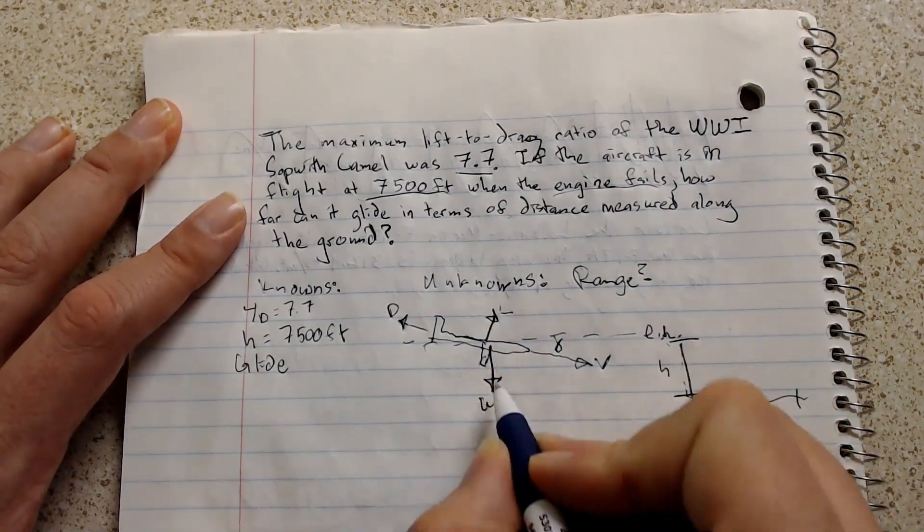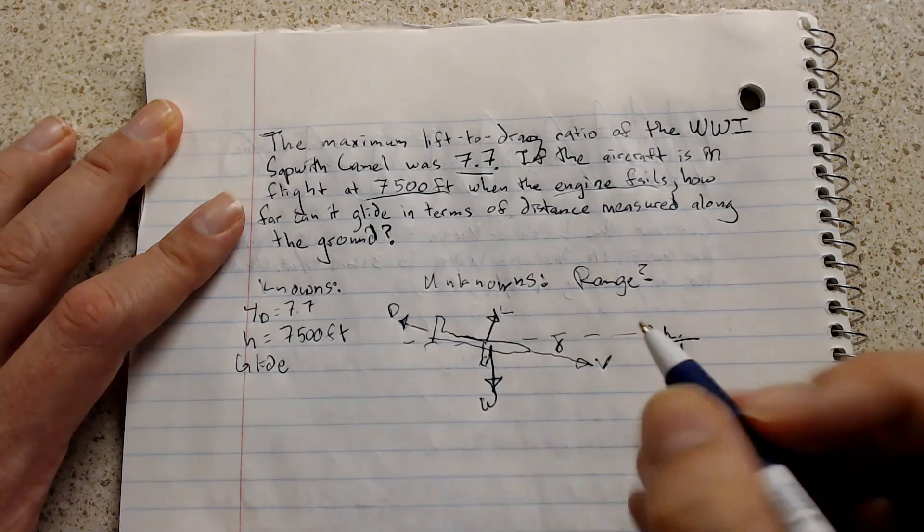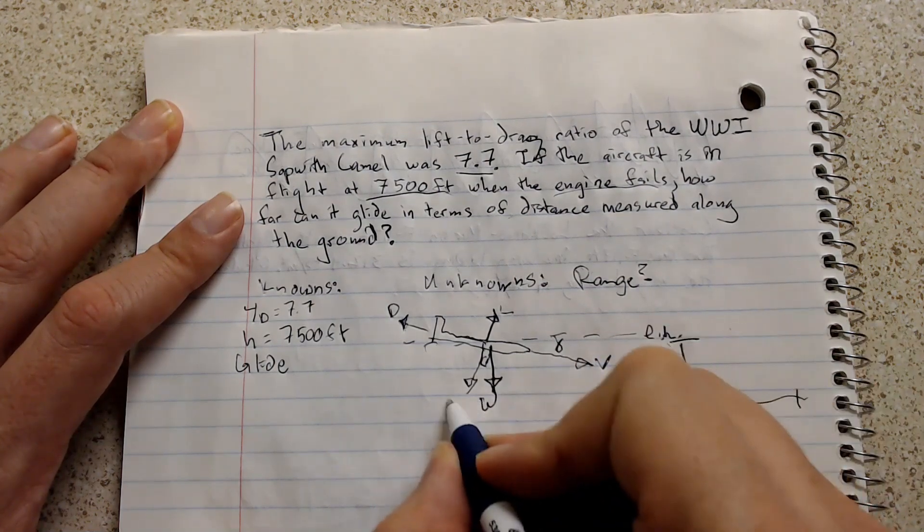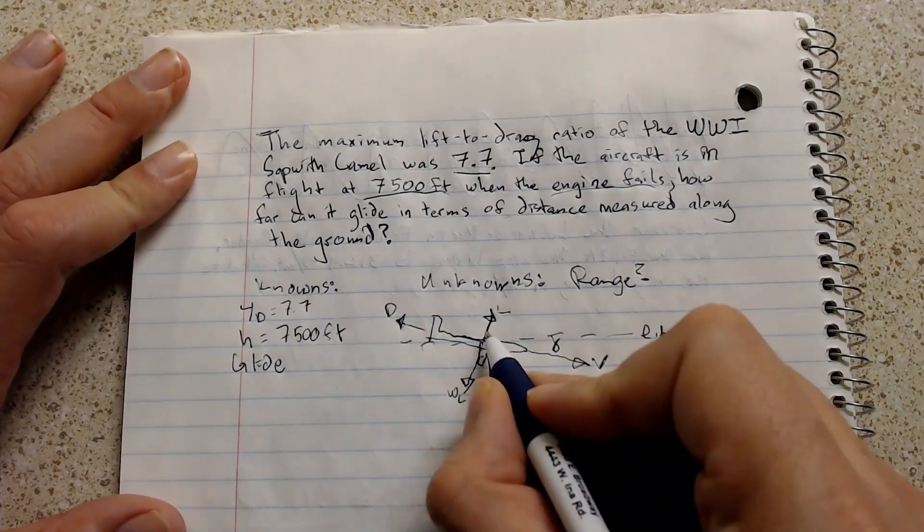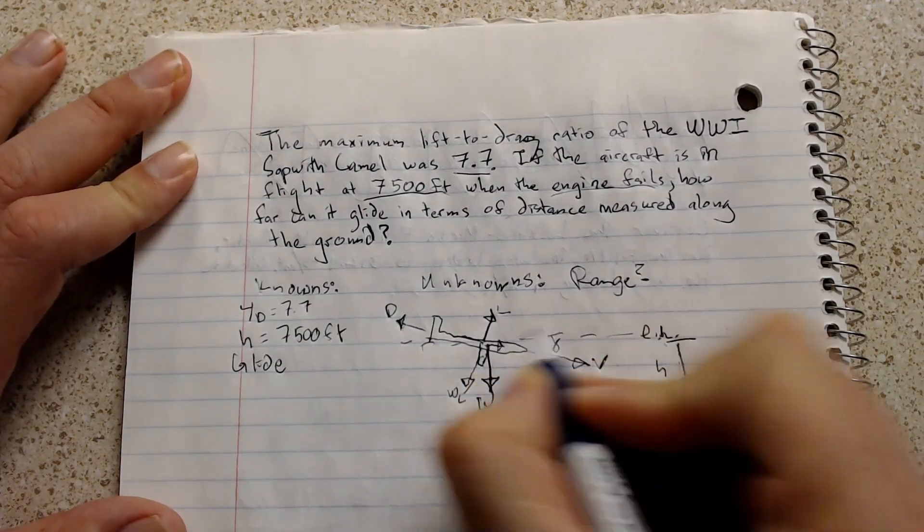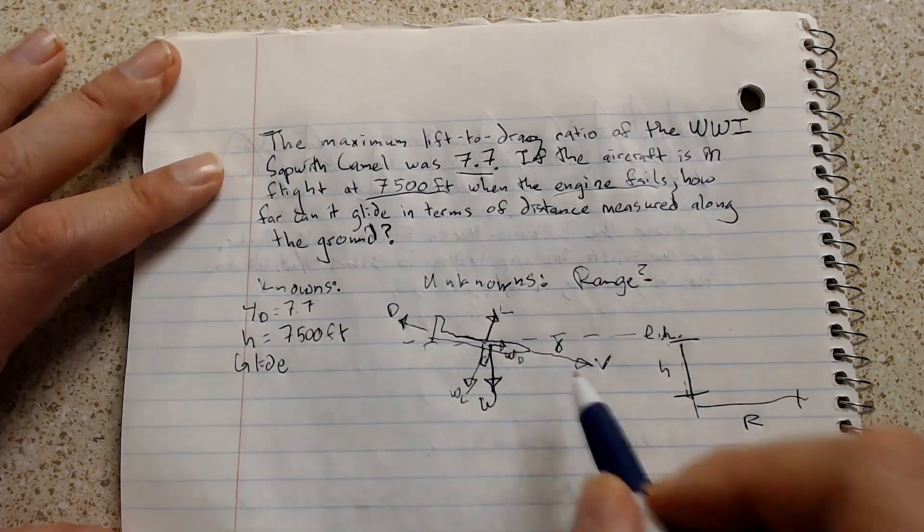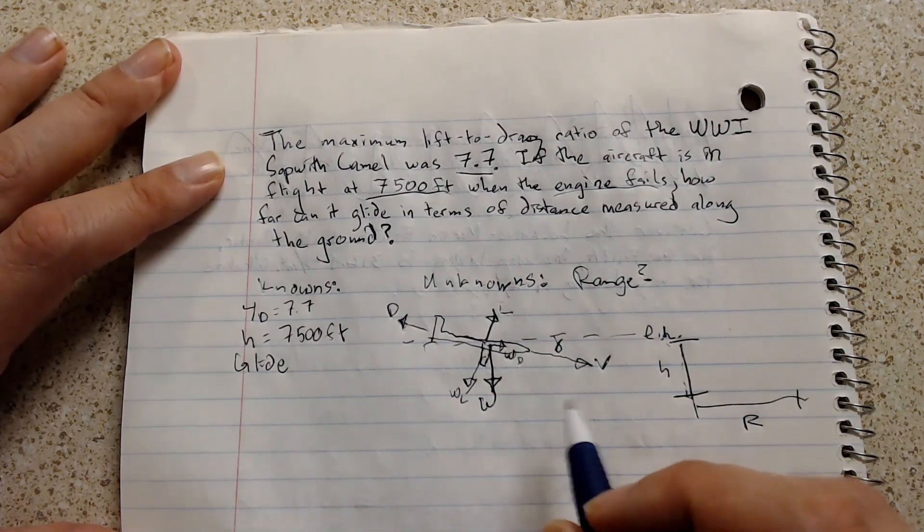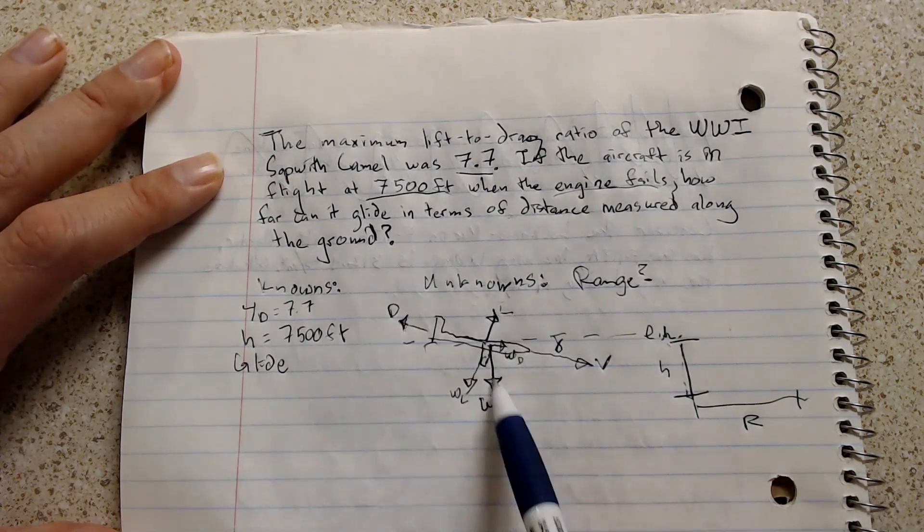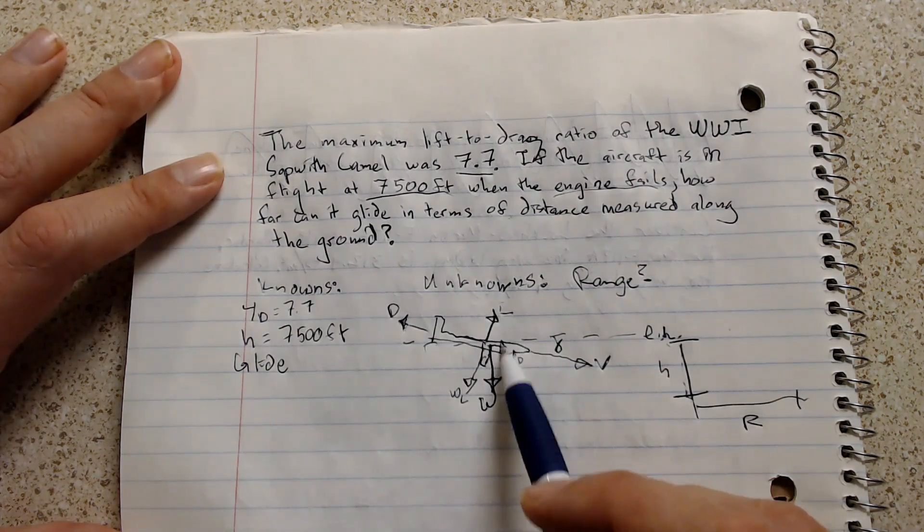Now, what we're going to do is we're going to take this weight value here, this weight vector. It's got a direction. And what we're going to do is we're going to split it up into a weight component that acts along the lift vector and then we can also have a weight component along the drag vector. Now, since we're in an equilibrium state where we're not accelerating, the lift is going to have to equal this component of weight. And then the drag is going to also have to equal this component of weight.